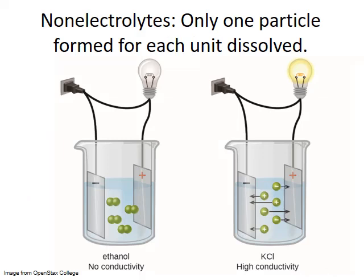In contrast, non-electrolytes are molecular compounds and do not dissociate in general. As a result, non-electrolytes form only one particle for each molecular unit dissolved, and they behave exactly as expected according to colligative property calculations — exactly as predicted based upon their calculated molality. Ethanol is a great example of a non-electrolyte. The ethanol molecule doesn't dissociate into separate charged ions, and as a result it's not capable of carrying a current — that's where the names electrolyte and non-electrolyte come from.